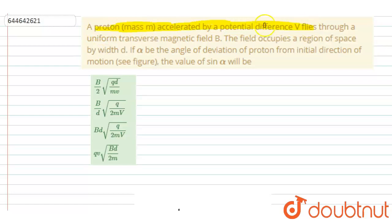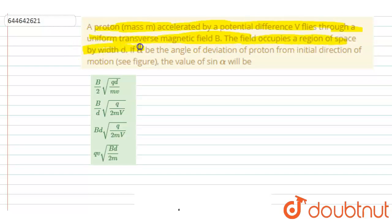Hello everyone. A proton of mass m is accelerated by a potential difference V and flies through a uniform transverse magnetic field B. The field occupies a region of space of width d. Let alpha be the angle of deviation of the proton from the initial direction of motion.